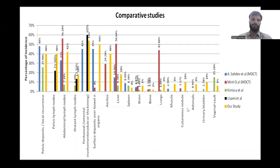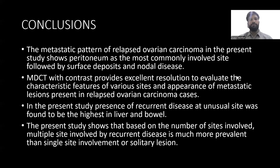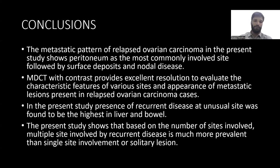A comparative study was also done. There was more peritoneal and nodal involvement, with bone, muscle, and pleural thickening being the least. The conclusions from this study were that the metastatic pattern of relapsed ovarian carcinoma shows peritoneal nodules as the most commonly involved site. With contrast-enhanced CT, we achieved excellent resolution to evaluate the characteristic features and appearances of metastatic lesions at various sites. Recurrent disease at unusual sites was found to be highest in the liver. The study also showed multiple sites were involved, with and without nodal involvement.